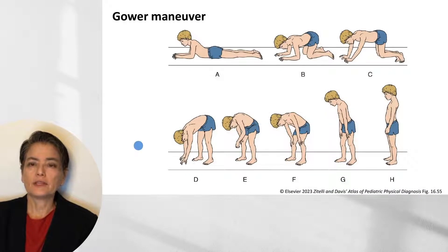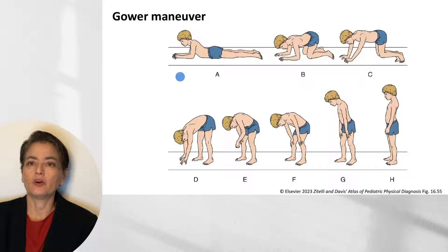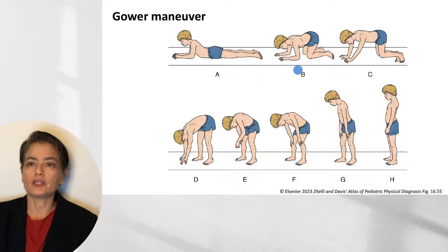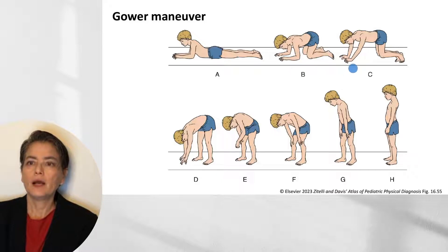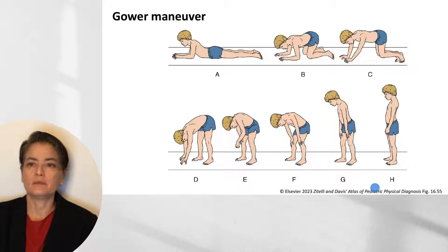The Gower maneuver is something a parent might describe observing their child use to rise from the prone position. Instead of simply flexing at the hips and using the legs to come upright, children must use their shoulder muscles — which at this point are still functional — to slowly rise, placing their hands on their thighs or knees to push upright to a standing position.